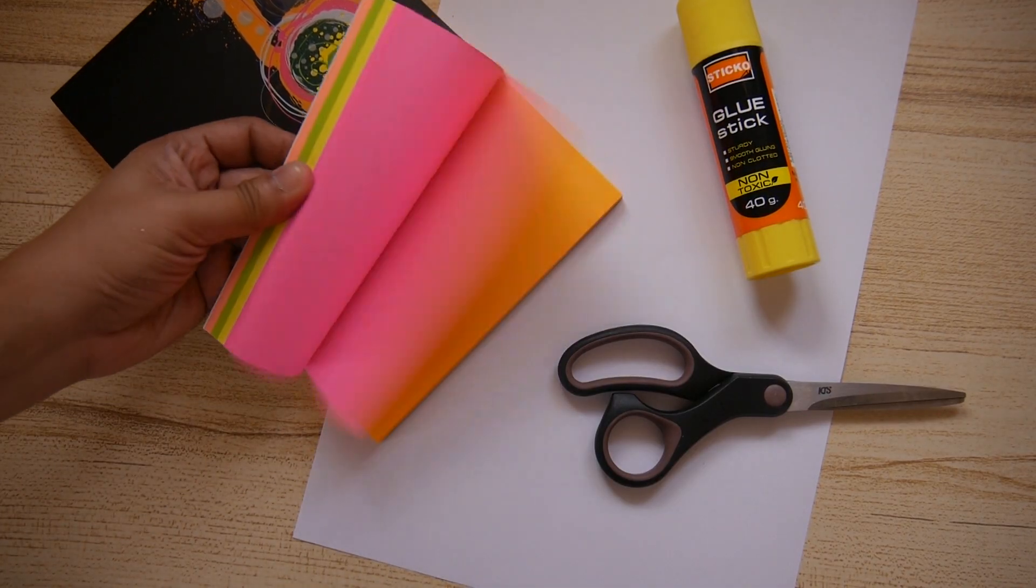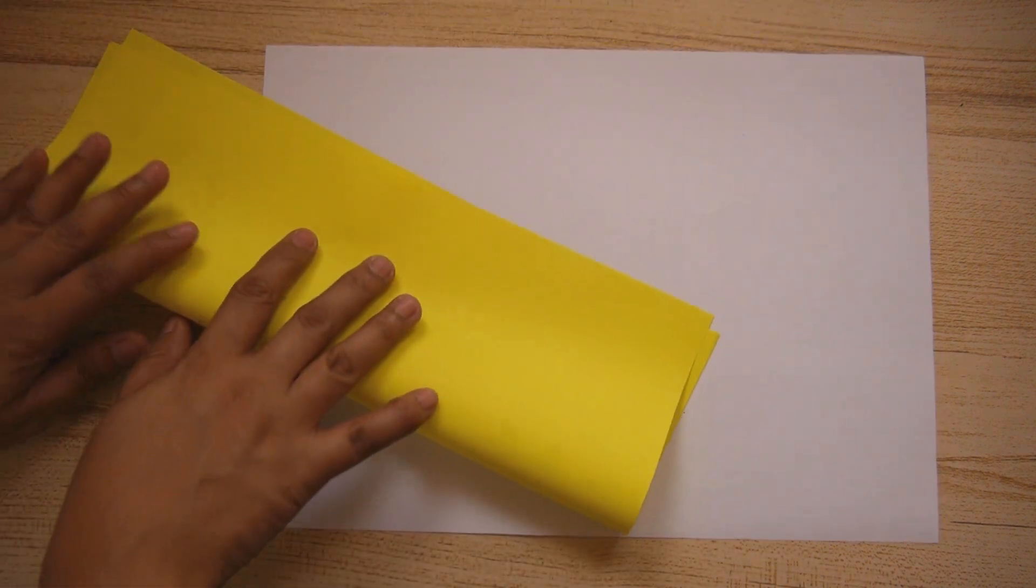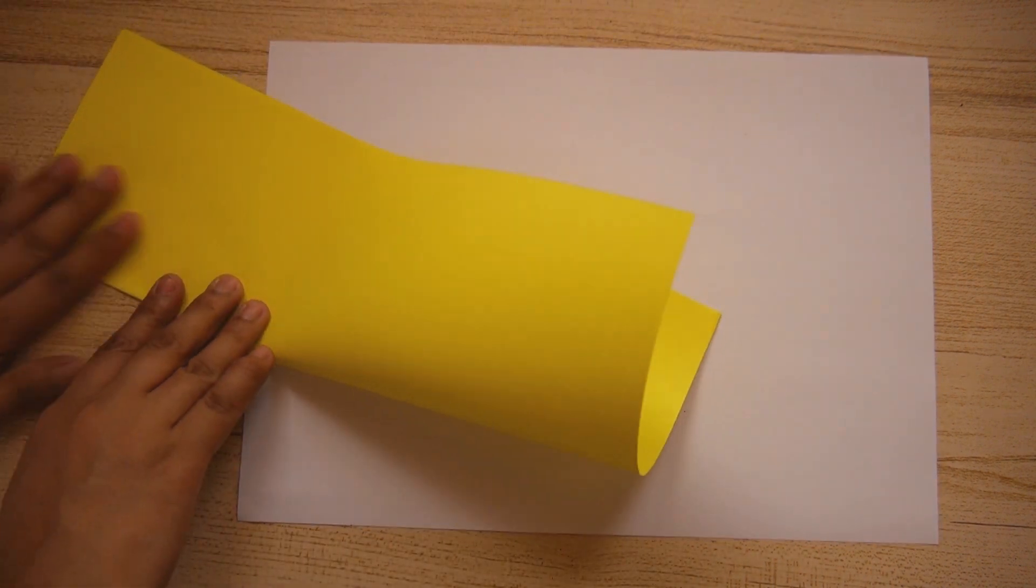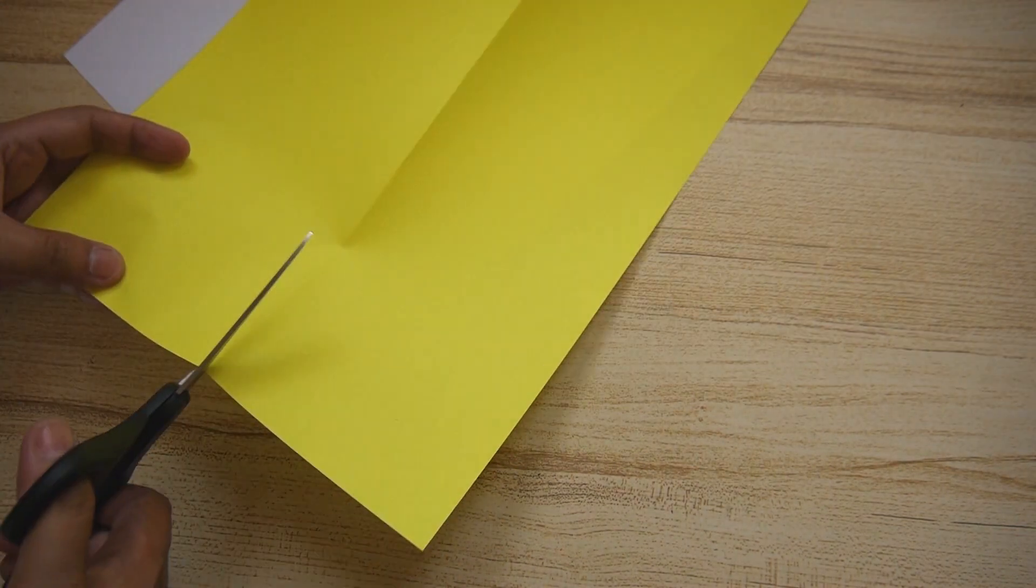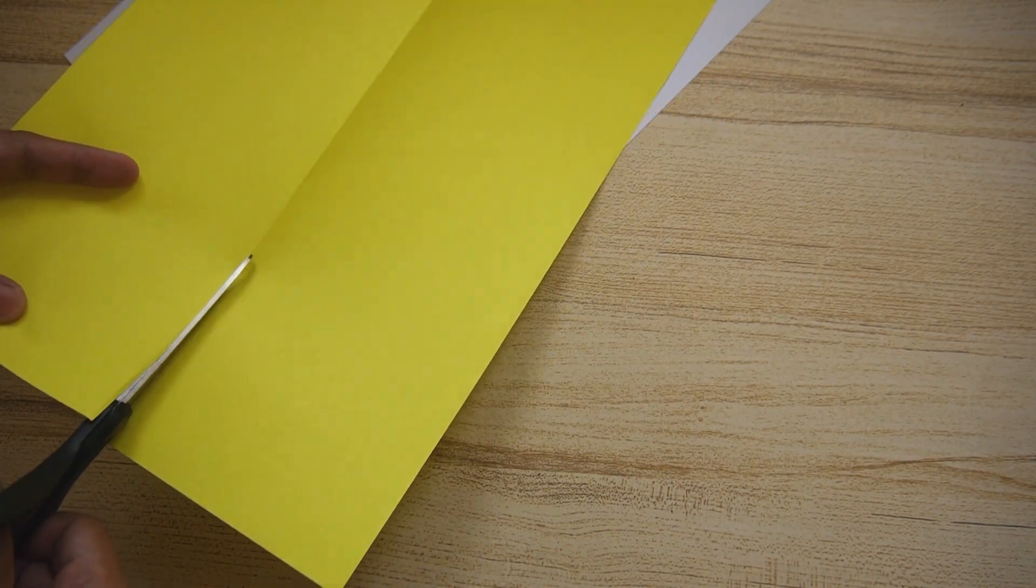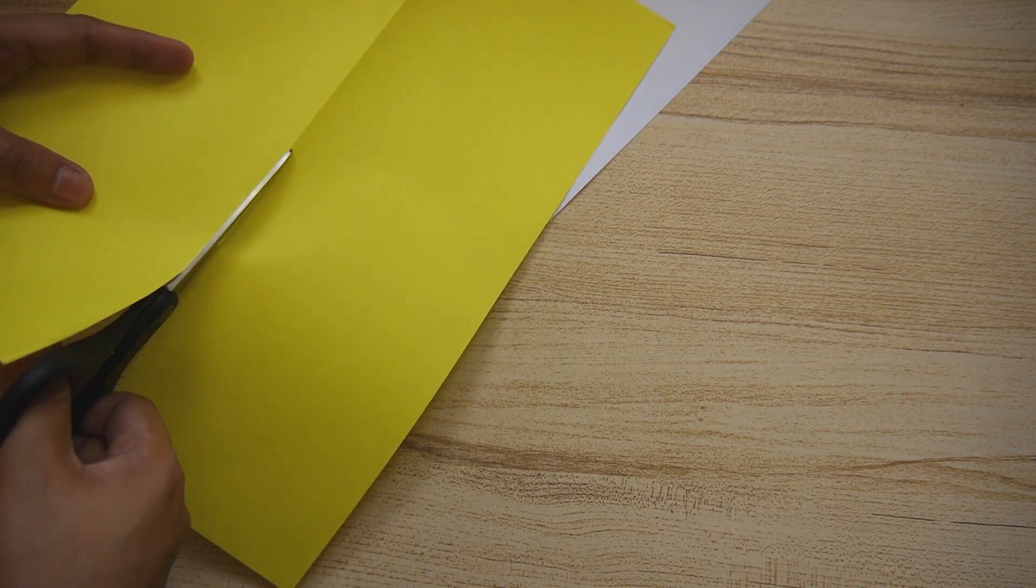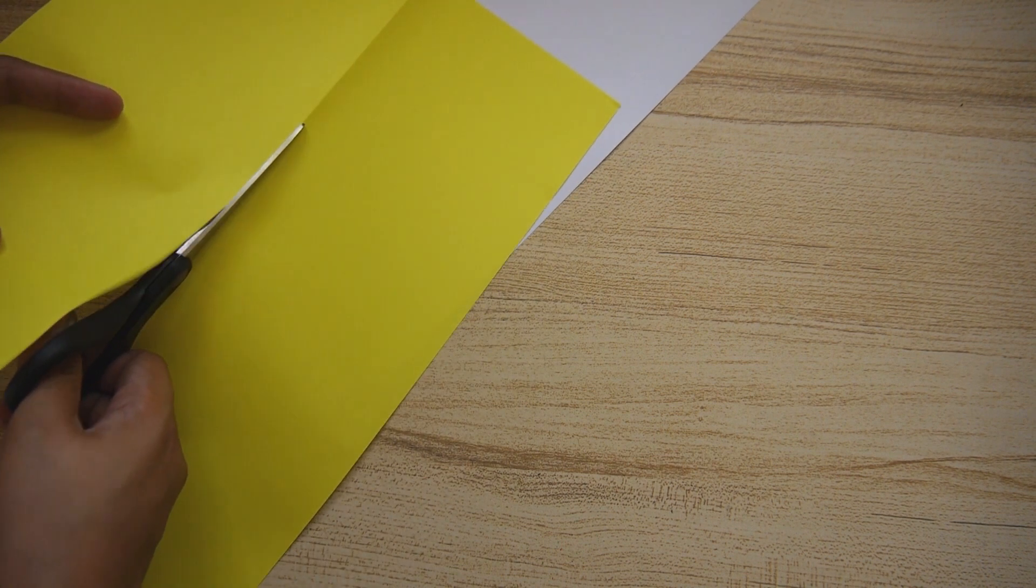So today we're going to make our own fish kite but it's going to be made of paper. These are the supplies you're going to need. The yellow paper is optional which means you don't have to do it if you don't want to, but be sure to leave some space for the fish's eyes.